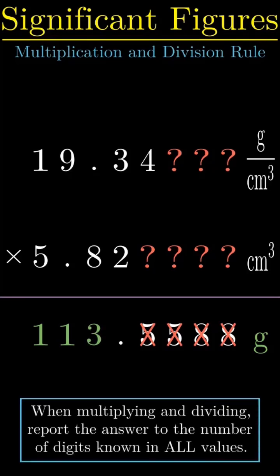In short, when multiplying and dividing, report the answer to the fewest number of digits known in all values.